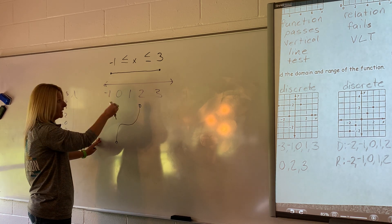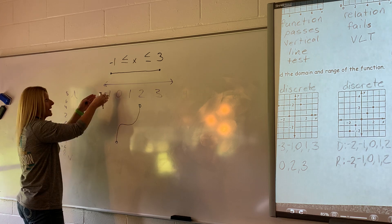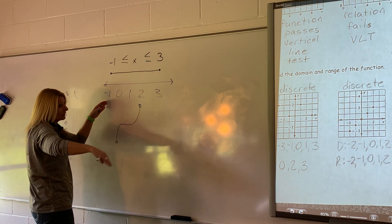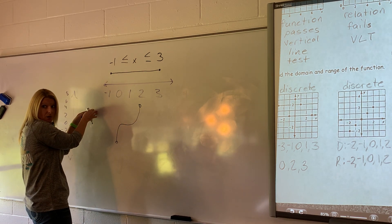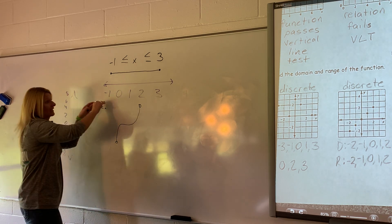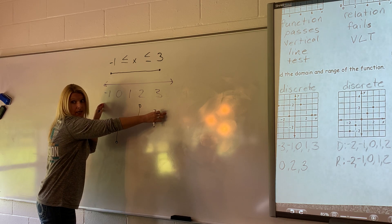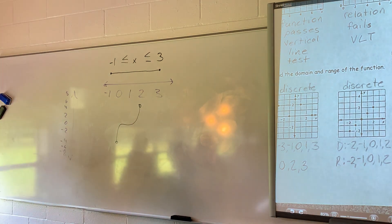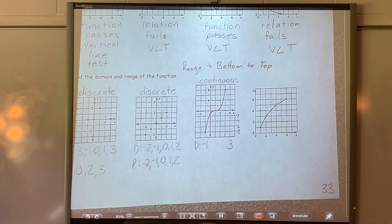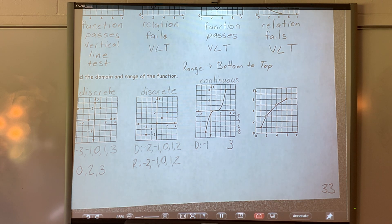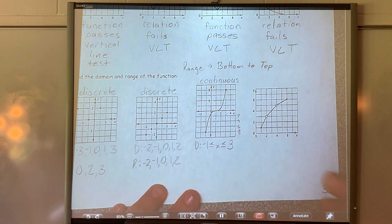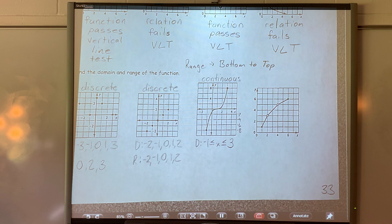Do y'all clearly see that it begins on the left side at negative 1 and ends on the right side at positive 3? It doesn't matter what it's doing in the middle. It has a beginning at negative 1 and an end at positive 3. Does it help to see that on the number line? So we can write that inequality: negative 1 ≤ x ≤ 3.